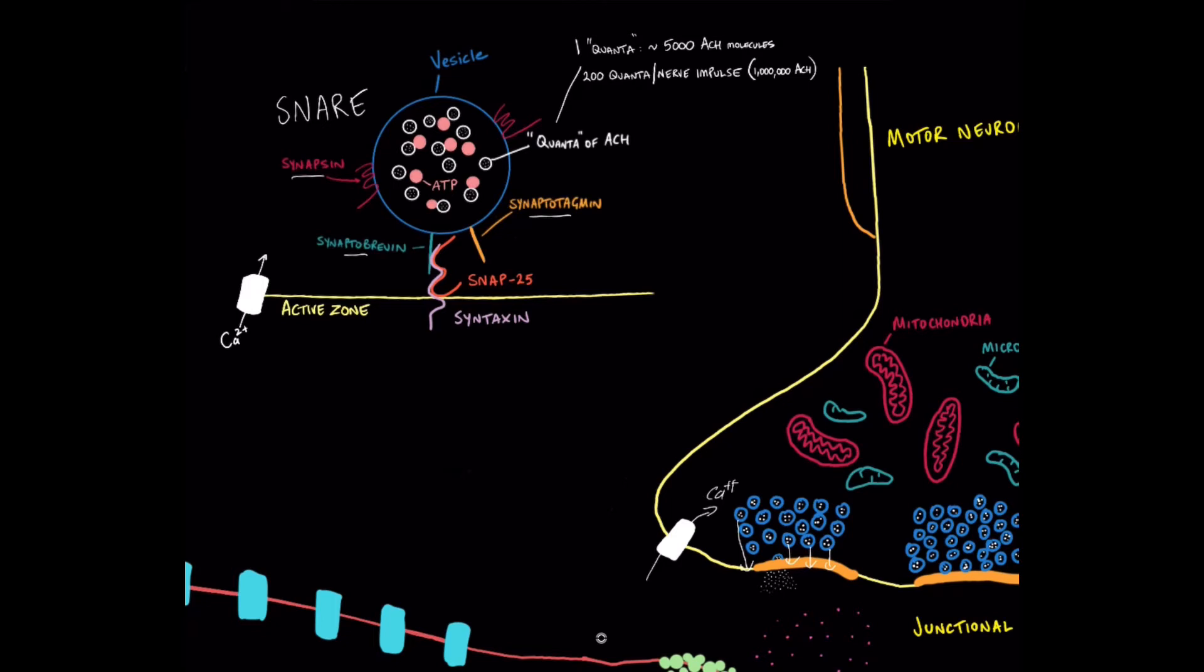So they all have slightly different roles. The synapsin's role is to tether the vesicle to the internal cytoskeleton of the motor neuron. And that keeps them in place and that's what allows them to stay congregated and clustered down by these active zones, is that they're kind of tethered to the microtubules and this internal cytoskeleton of the motor neuron. And that's synapsin's job to keep that in place.